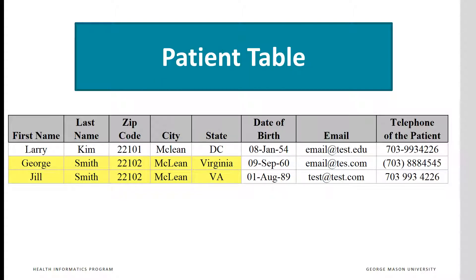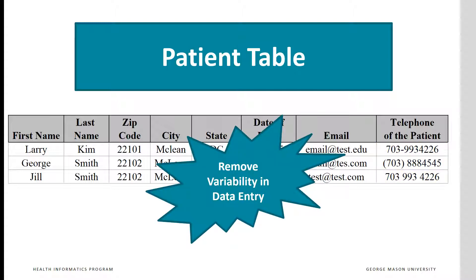Note that George and Jill Smith might be living in the same place. Note that states are entered in different ways — sometimes referring to Virginia by its abbreviation and other times spelling it out. Note how the letter L in McLean is sometimes capitalized and other times not. Note that for some phone numbers the area code is in parentheses and for others not. All of this variability in data entry can create errors in data processing, and these variations must be corrected before proceeding.